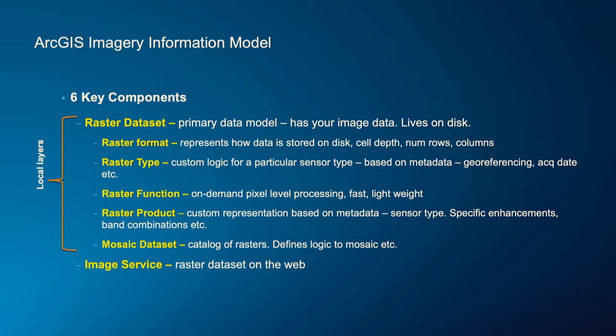The raster type could be pulling information from metadata, such as what georeferencing needs to be applied before it is displayed on the map frame. Then there are raster functions — very lightweight pixel-level processing that is executed on demand, only on the pixels that are shown on your screen. And then there are raster products, which are representational items you see in the user interface. They pull information based on what kind of sensor it is — Landsat, Sentinel, or Radarsat imagery. It is not something on the disk; it's just a representational item.